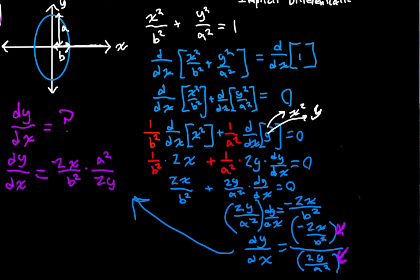So, this is going to be equal to negative 2X over B squared times A squared over 2Y. And you'll notice that this 2, we'll cancel that with this 2, and our final expression will be that the derivative of Y, DY DX is equal to A squared X over B squared Y.